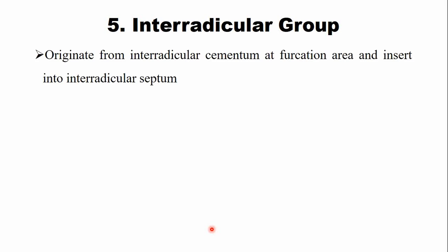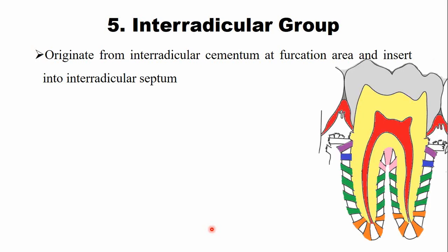The last group in the principal fibers is the interradicular group. These fibers originate from the interradicular cementum and insert into the interradicular septum of the alveolar bone. The interradicular fibers are only present in multi-rooted teeth — that is, molars and the first premolar when it has two roots.